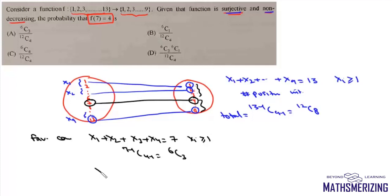And again from 4 to 9 we can write x4 plus x5 plus x6 plus x7 plus x8 plus x9 equals 7. Here we take this as x4 because we are talking about all the images of 4 from 7 to 13.